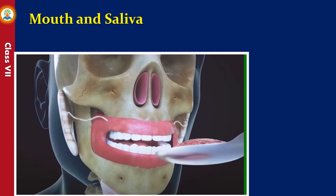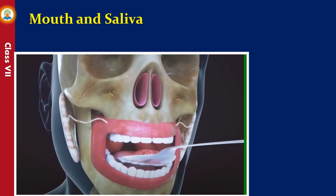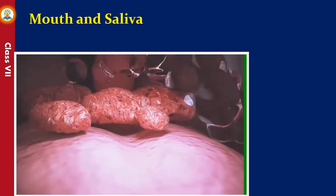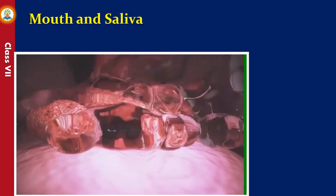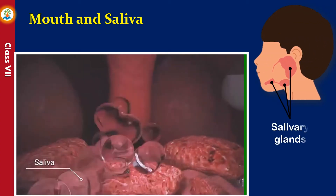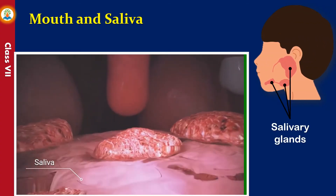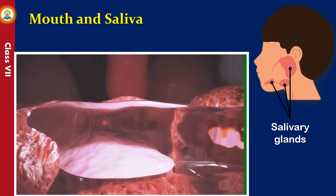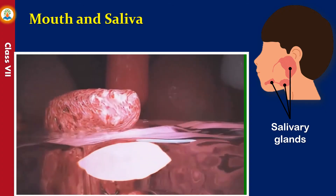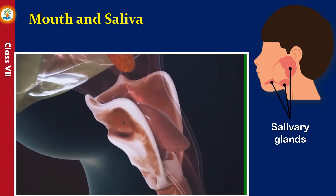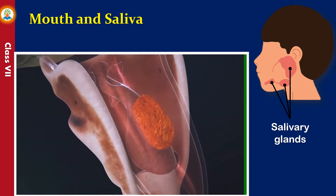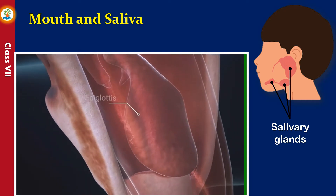Digestion of food starts in the mouth with the help of saliva, tongue, and teeth. Saliva is secreted by salivary glands. Saliva contains an enzyme called salivary amylase, which acts upon starch present in food and breaks it into simple sugars. It also acts as a lubricant that makes food slippery.